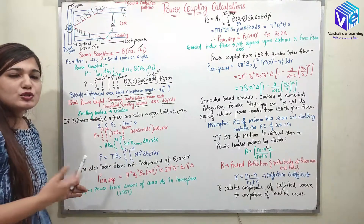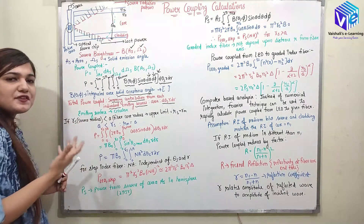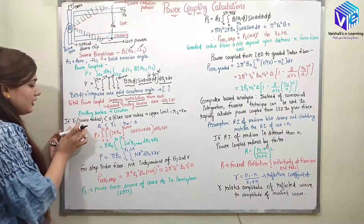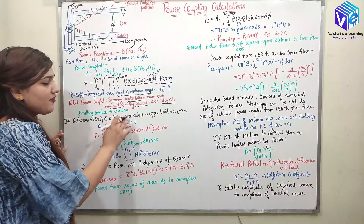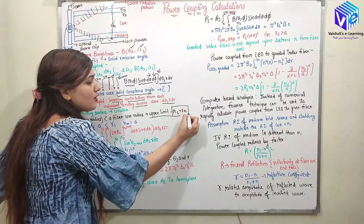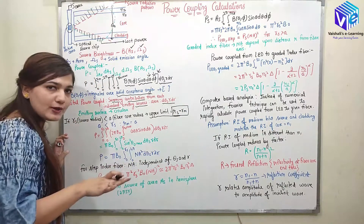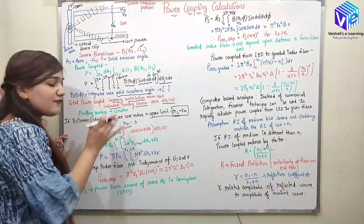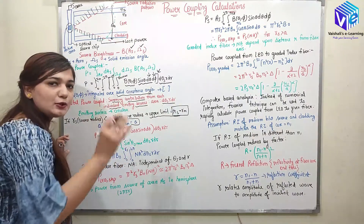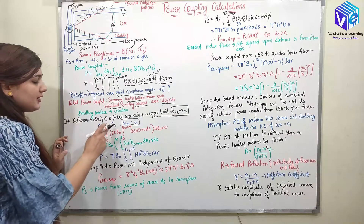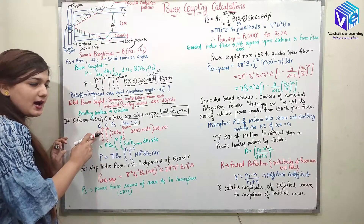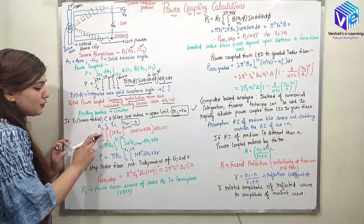The emitting surface is chosen to be circular, so we use the spherical coordinate system. Now the condition on R_m: if the source radius is less than the fiber core radius, then R_m equals the source radius. But if the source radius is greater than the fiber radius, then R_m equals the fiber radius — the smaller of the two is taken as R_m. Here we have considered the source radius less than the fiber core radius and taken the upper limit to be R_S.